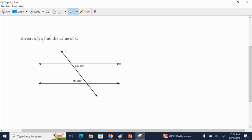So it says given that line M is parallel to line N, find the value of X. So in this picture, I know that M is parallel to N. T is my transversal.